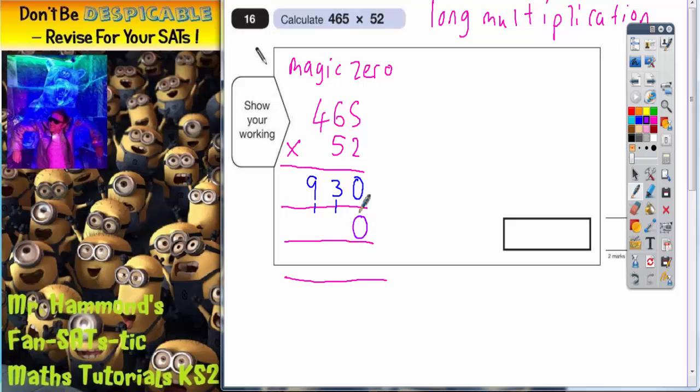So to multiply by 50, you put your magic 0 in and then just multiply everything by 5. So it might have the same effect as multiplying by 50. So 5 5s, 5 6s, 5 4s in that order.